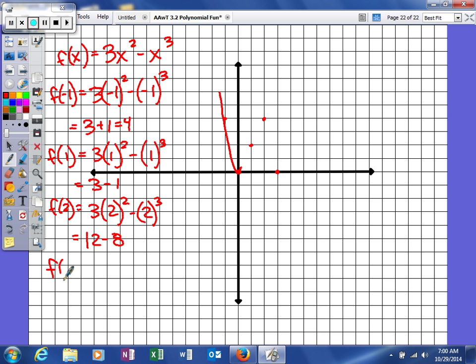And then lastly, I'll plug in something like four. When I do that, I'll get three, four squared, minus four cubed. That'll give me 16. 16 times three is 48.